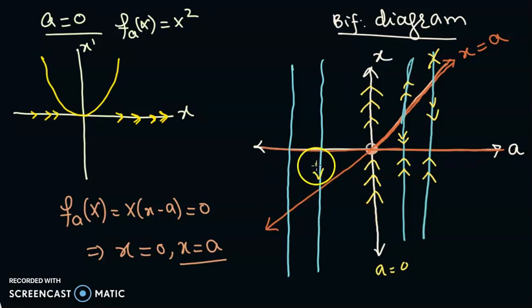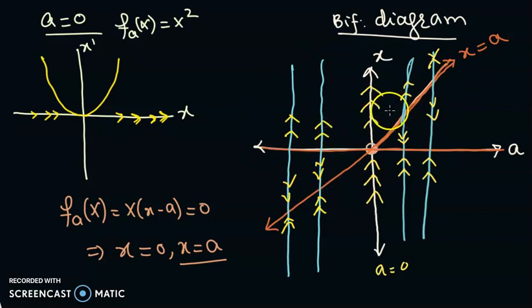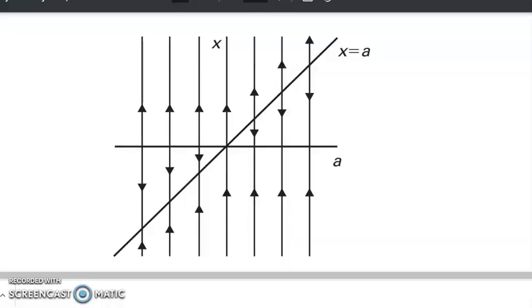For a less than zero, we again have two equilibrium solutions: x = 0 and x = a. In this region x = a is a sink so the flow should approach it, while x = 0 is a source so the flow is repelled. We can see this more clearly in the book: if a is greater than 0, x = 0 is sink and x = a is source; if a is less than 0, x = a is sink while x = 0 is source. Thank you.